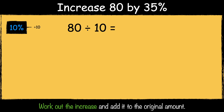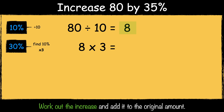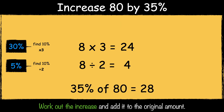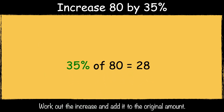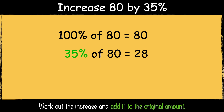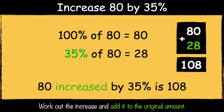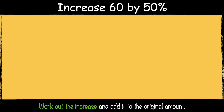Here's the next example: increase 80 by 35%. First, let's find 10% of 80 by dividing it by 10. 80 divided by 10 is 8. Then we multiply the answer by 3 to find 30%. 8 times 3 is 24. Then if we divide the 10% answer by 2 we can find 5%. 8 divided by 2 is 4. So 35% of 80 is 28. The next step is to add it to the original amount, so 80 add 28 is 108. So 80 increased by 35% is 108.